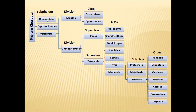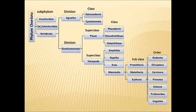Coming to the other two subphyla, Urochordata and Cephalochordata, they do not possess any vertebrae, and they also do not possess a cranium. So these two groups are collectively called Acraniata. In this class, we are focused on Vertebrata only — the animals which possess vertebrae and a cranium or skull.